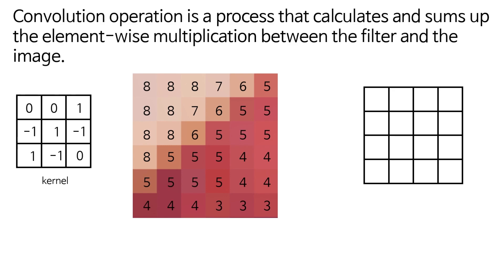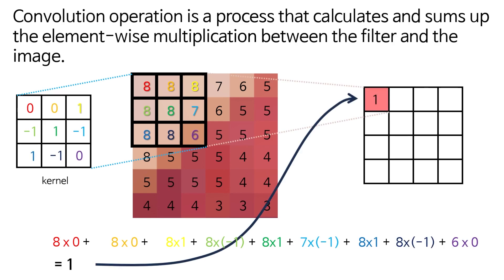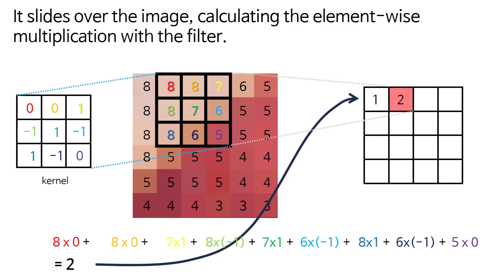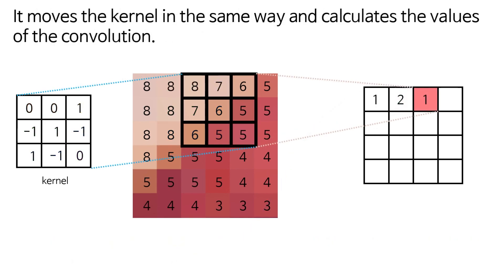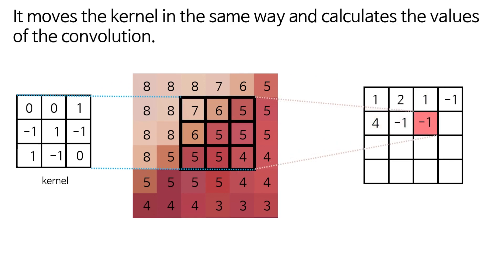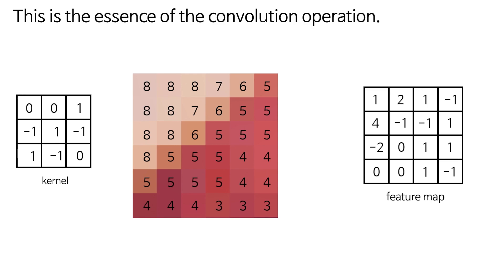This allows the network to detect and extract local patterns in the image. Convolution operation is a process that calculates and sums up the element-wise multiplication between the filter and the image. It slides over the image, calculating the element-wise multiplication with the filter, moving the kernel and calculating the convolution results. The results are collected to create a new feature map.